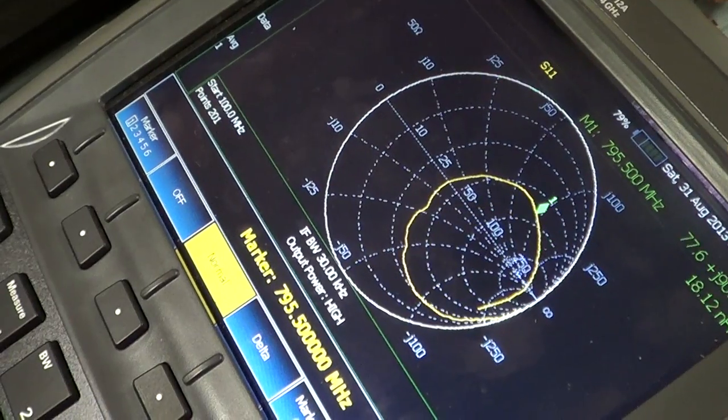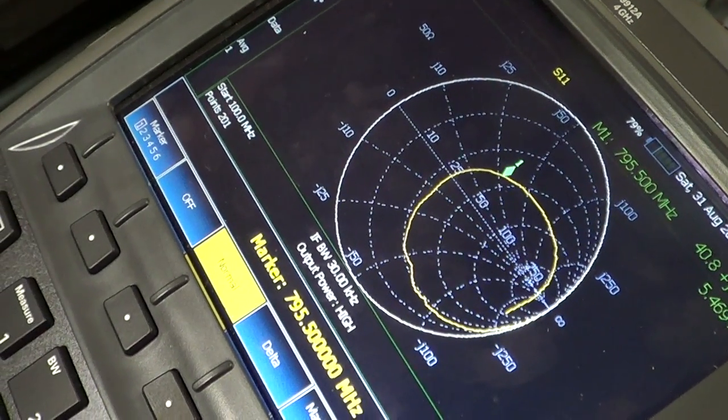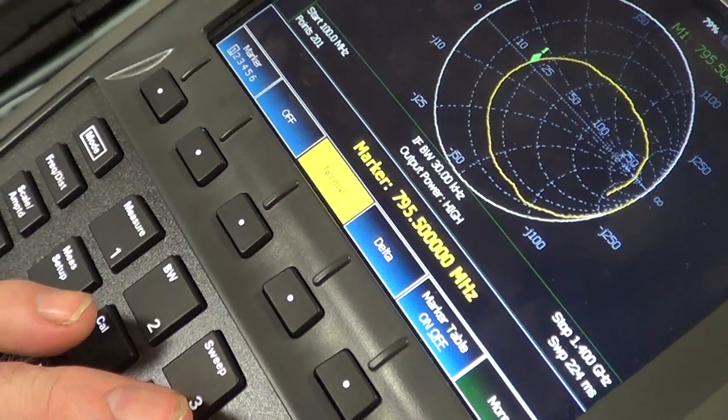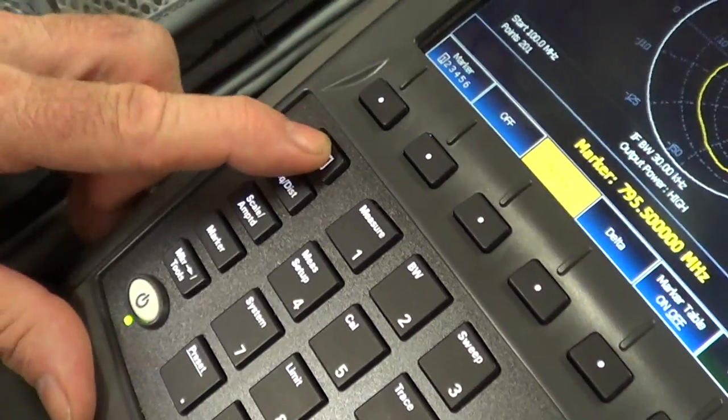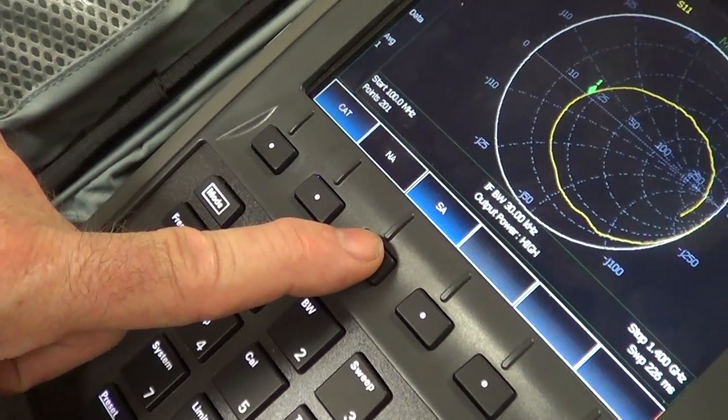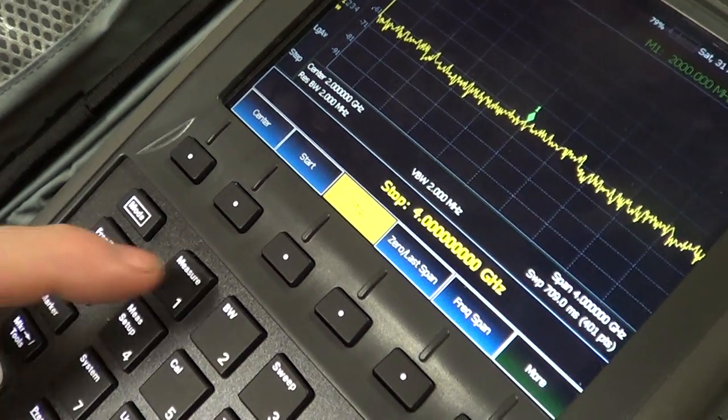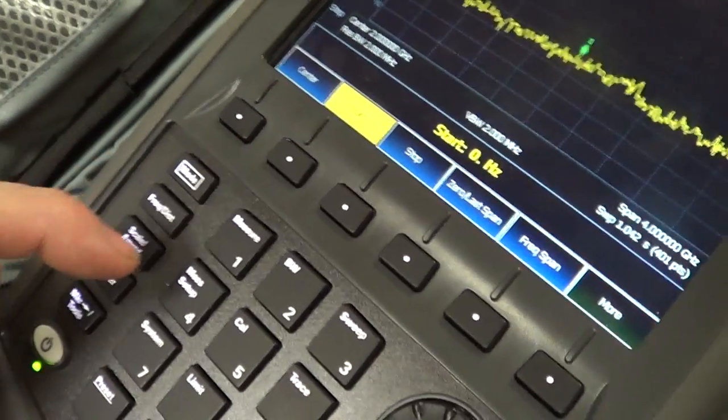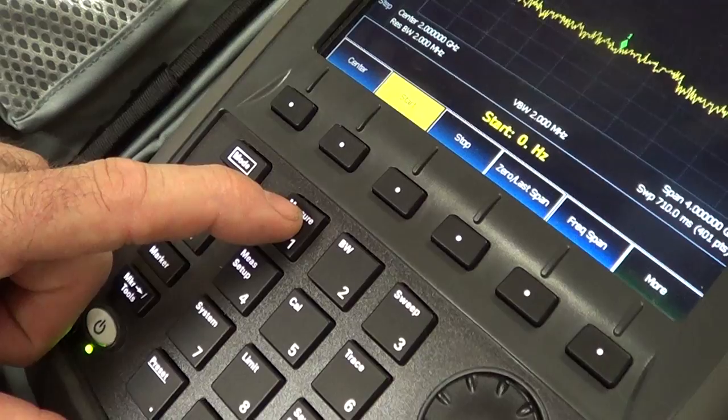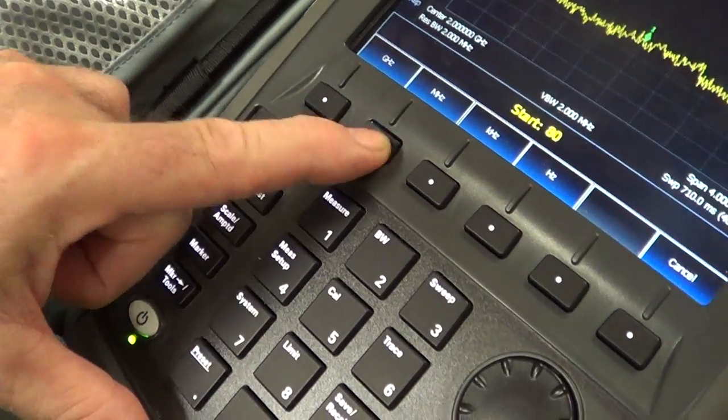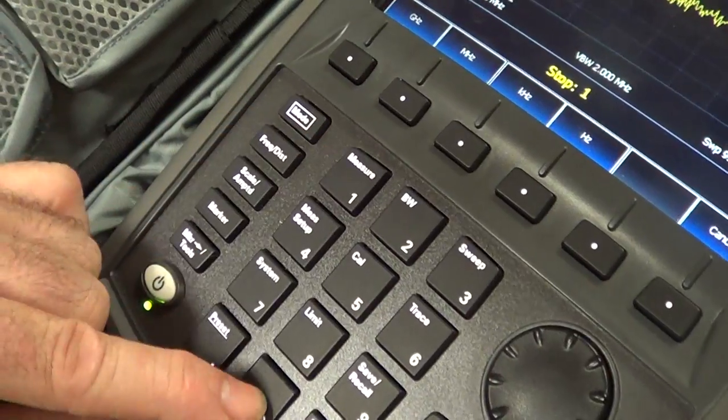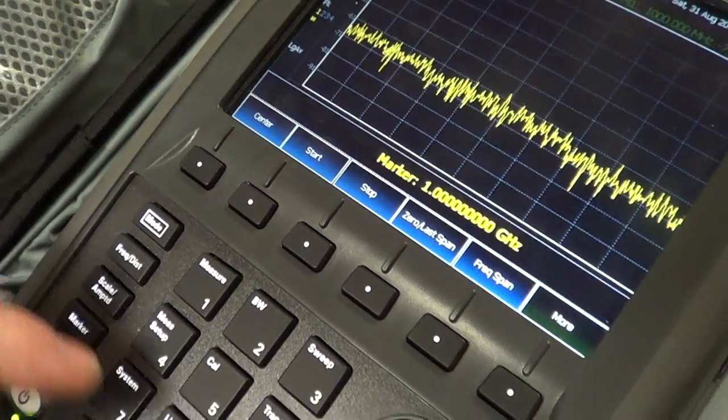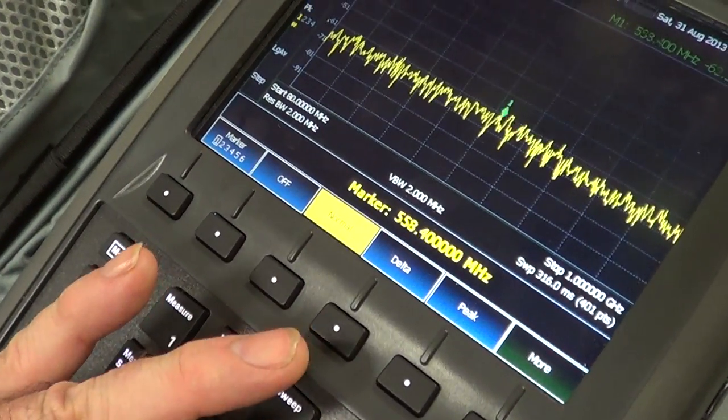Now if I go back here to a different mode and go to spectrum analyzer, I can start here at, let's say, 80 megahertz and let's stop at one gigahertz - 1000 megahertz. I can go through here with the marker and see a bunch of junk that I've got on here.